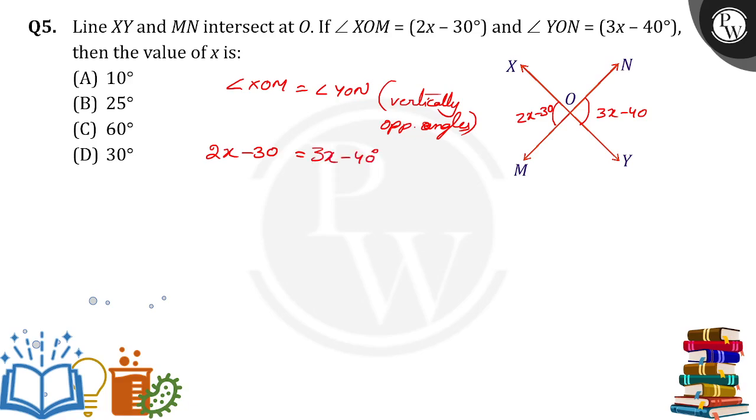So transposing all variables to one side, 2x minus 3x is equal to minus 40 plus 30. So minus x is equal to minus 10. Minus minus cancel, so x is 10.